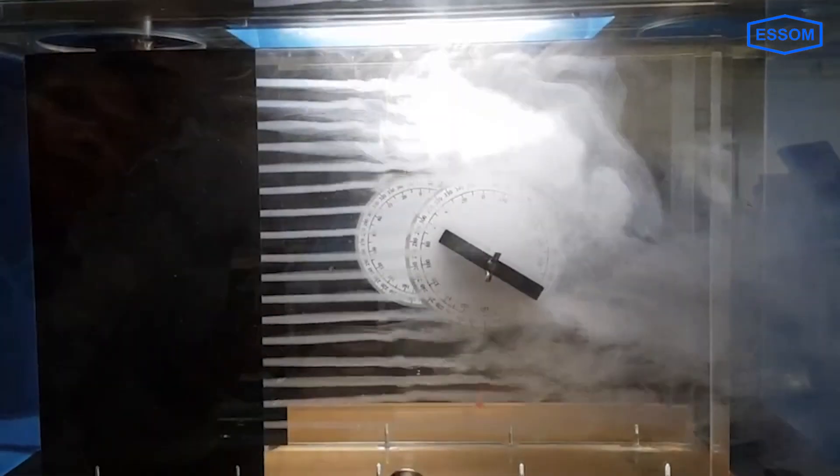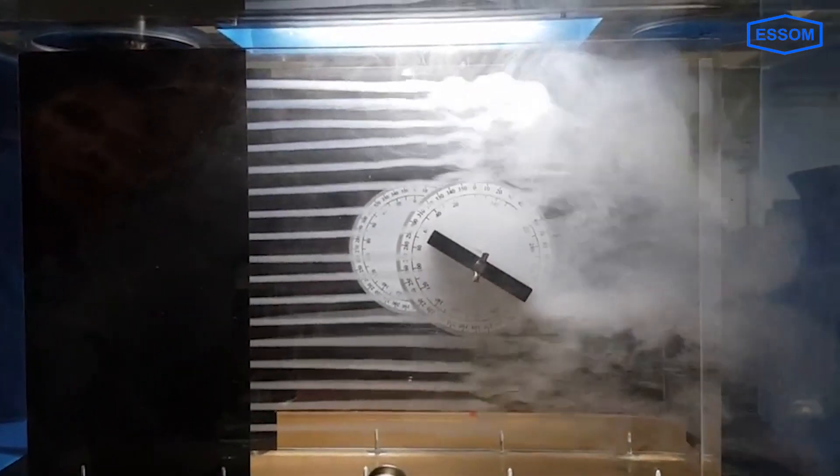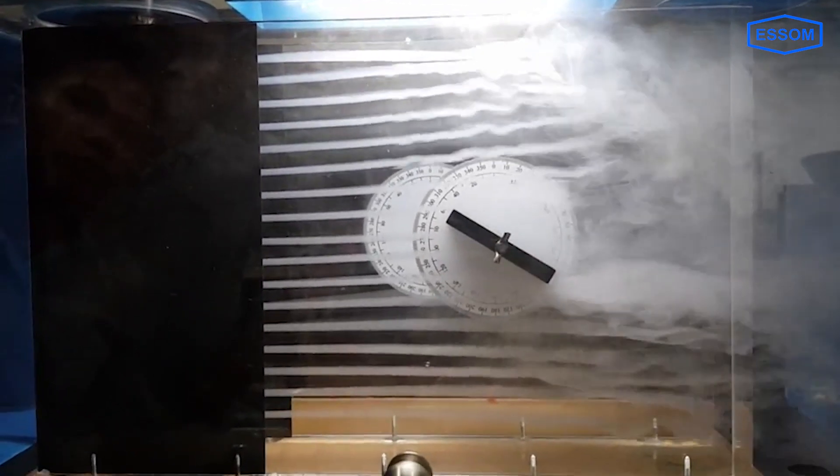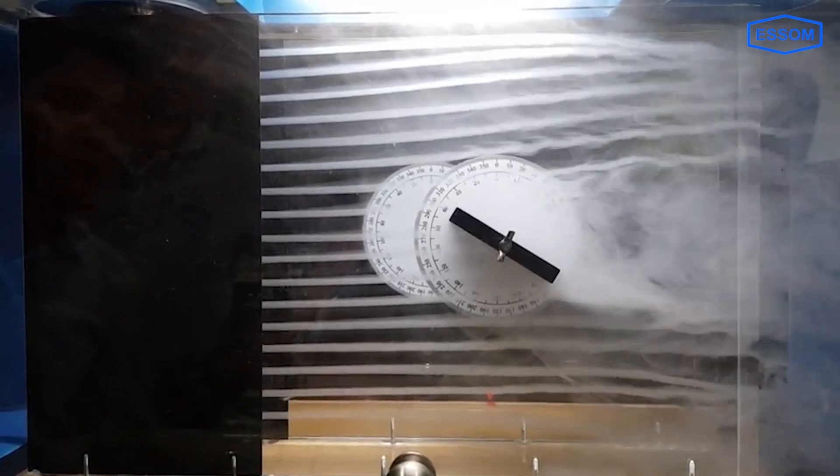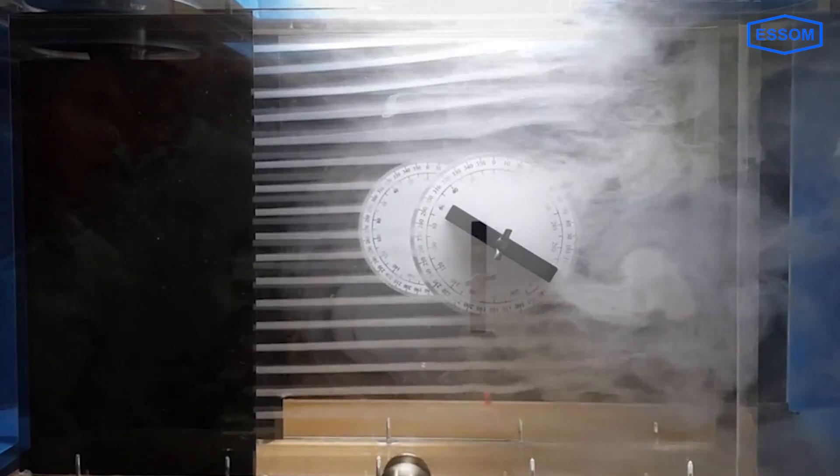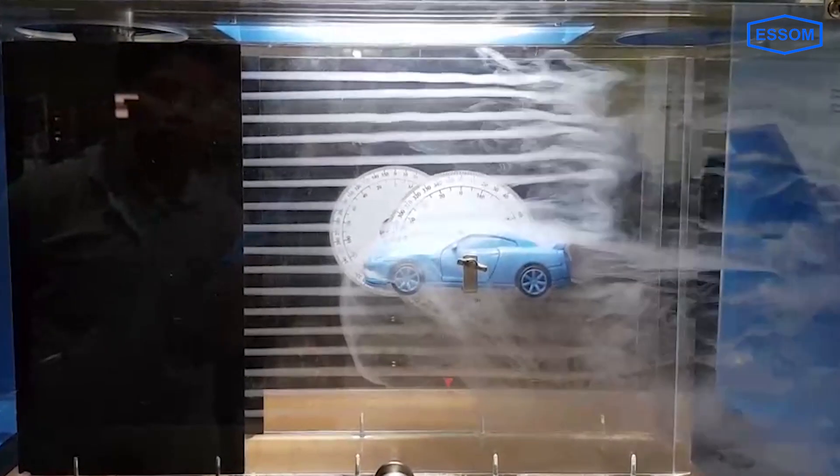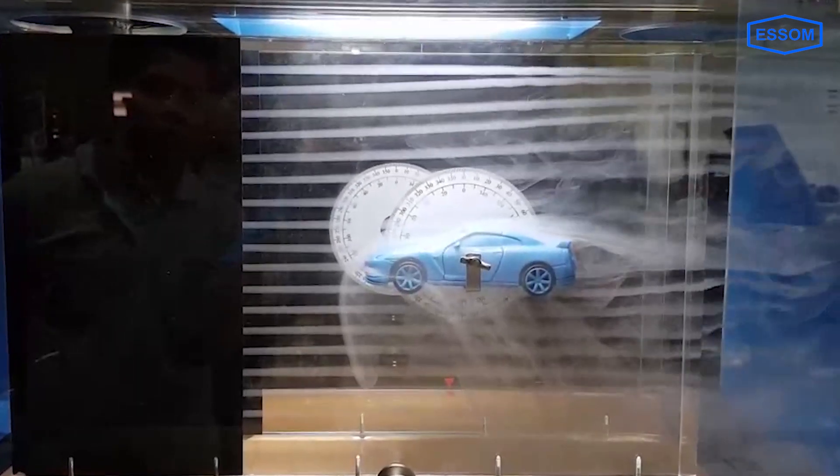The air enters the tunnel via an entrance flare, a flow straightener, three wire mesh screens, and a high contraction ratio section ensure uniform velocity across the transparent section.